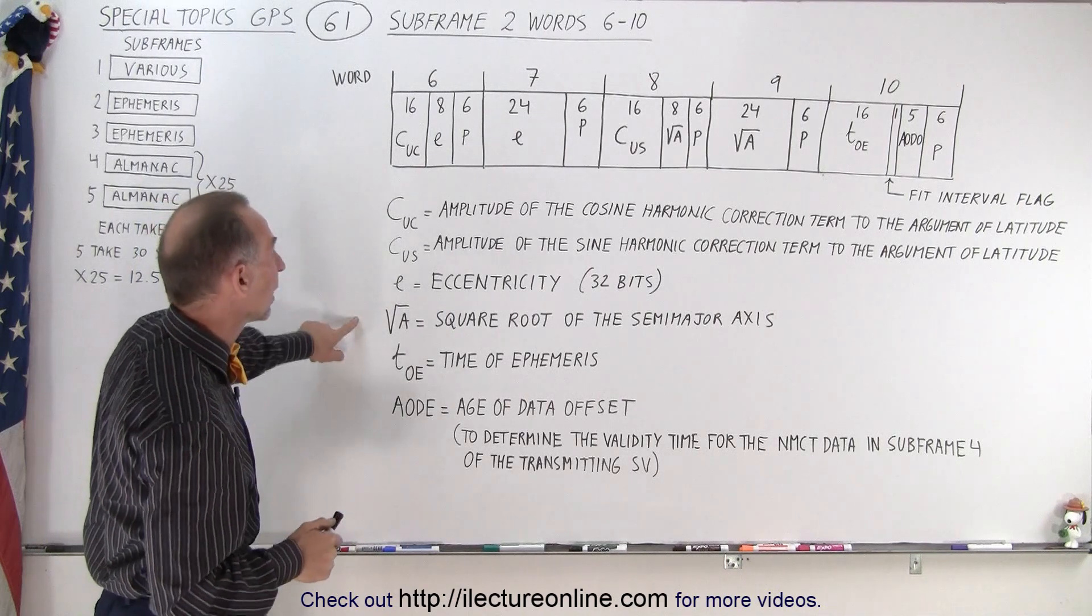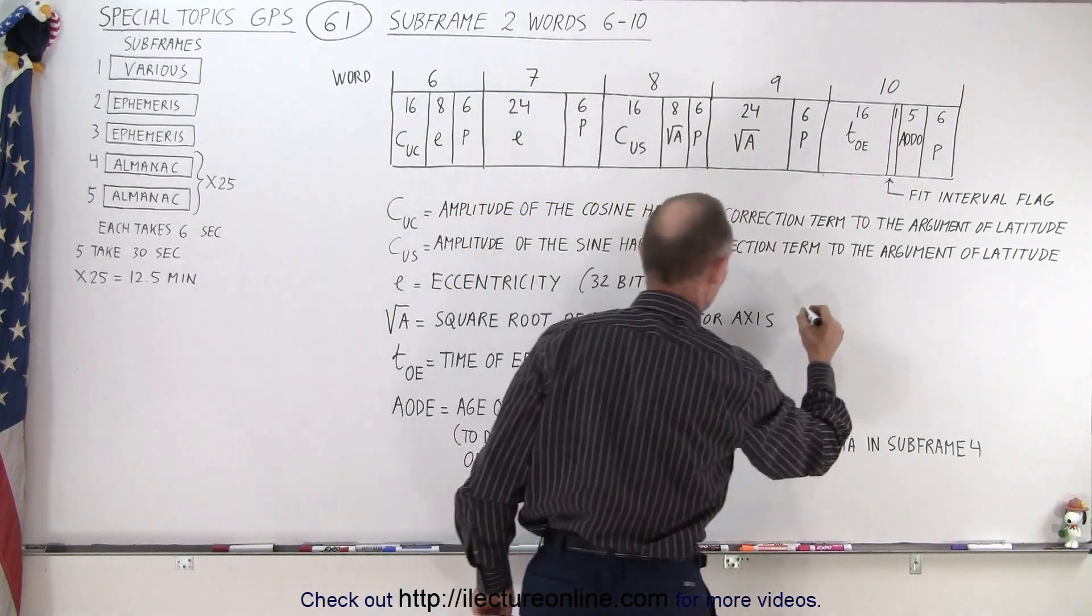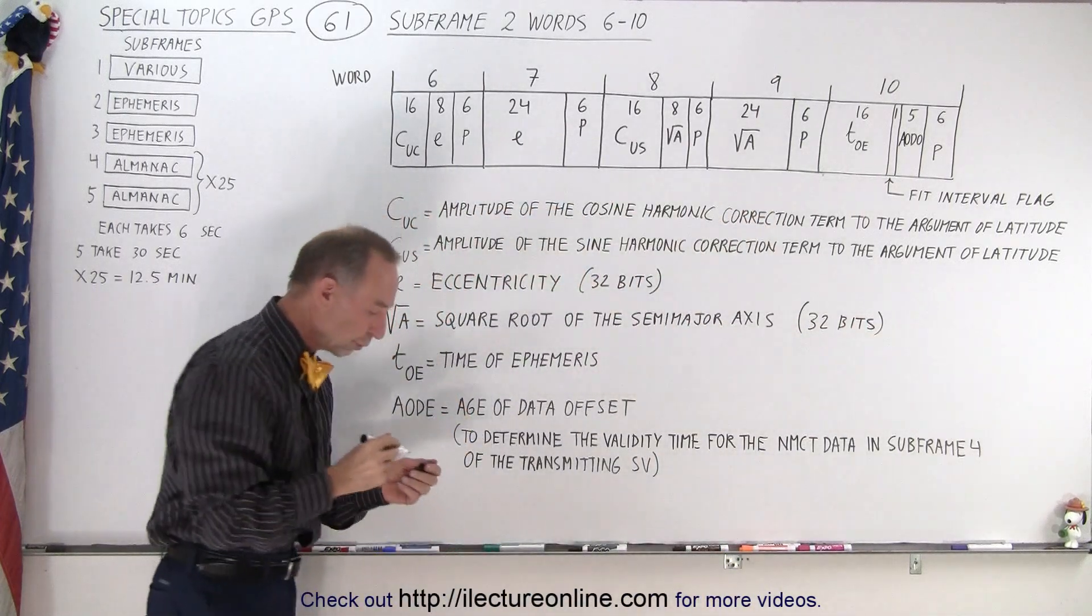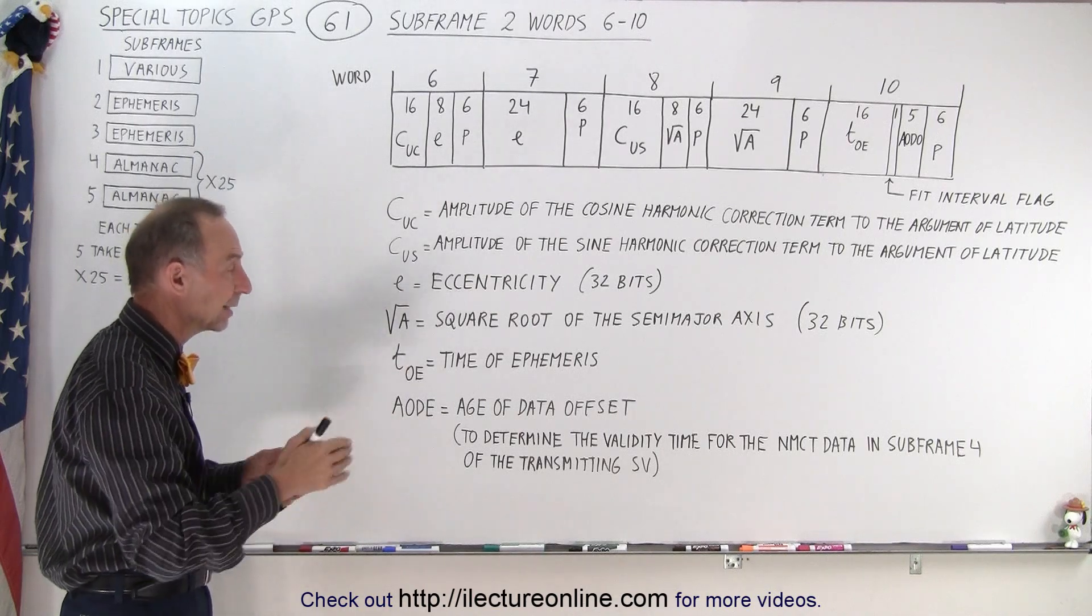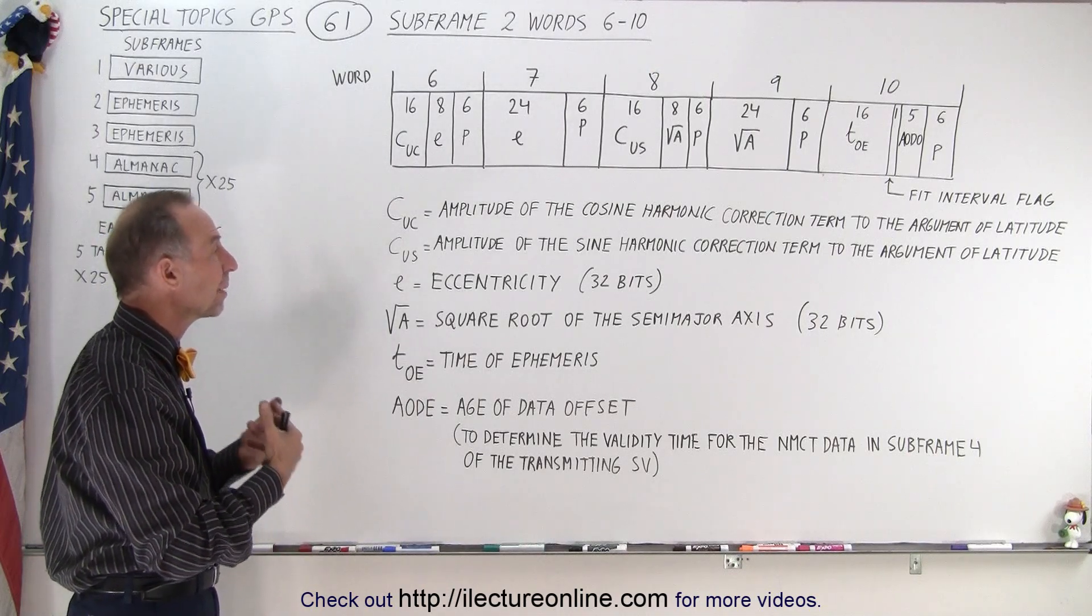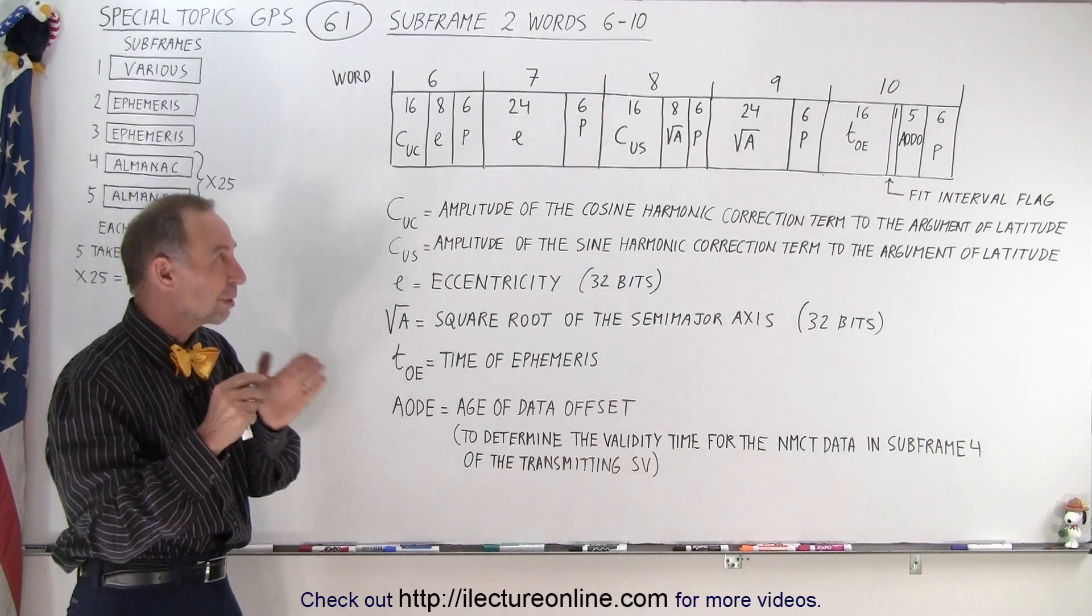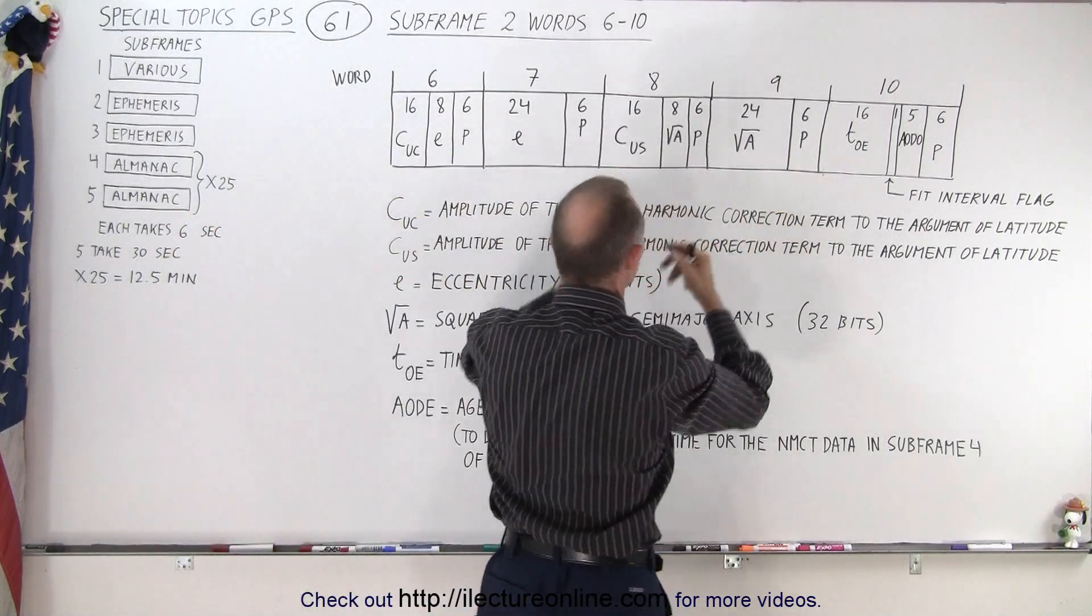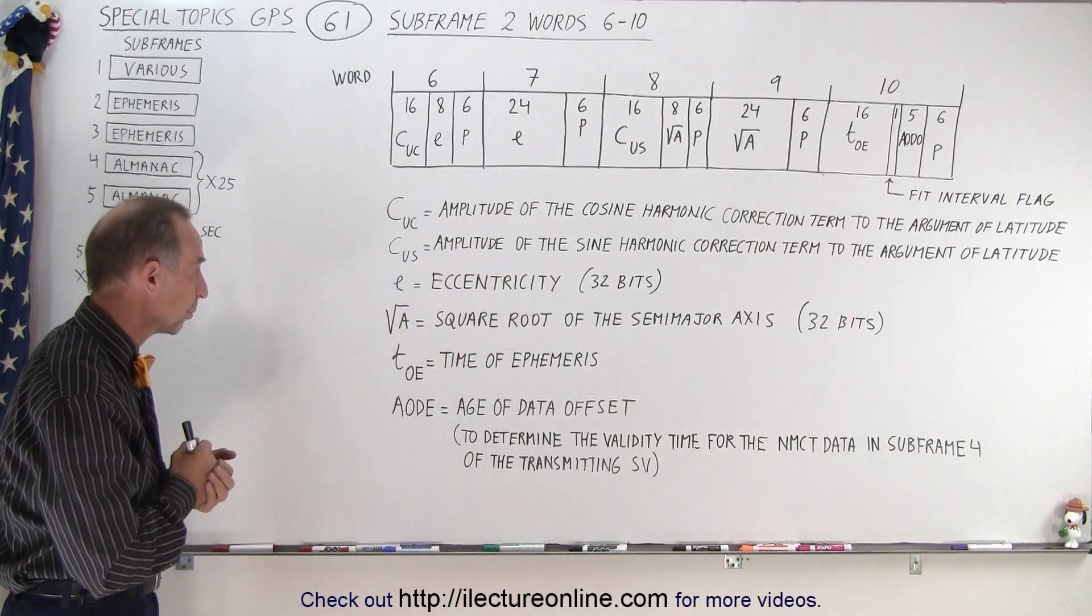Then we also have 32 bits allocated for the square root of A, which is the square root of the semi-major axis, the average distance from the center of the Earth to the satellite. Since we have an elliptical orbit, we're going to have a semi-minor and a semi-major axis. The semi-major axis gives you the average distance, and we want to know that extremely accurately. We have 8 bits in word 8 and 24 bits in word 9 to allocate for that data, as accurately as possible to as many significant figures as we can.